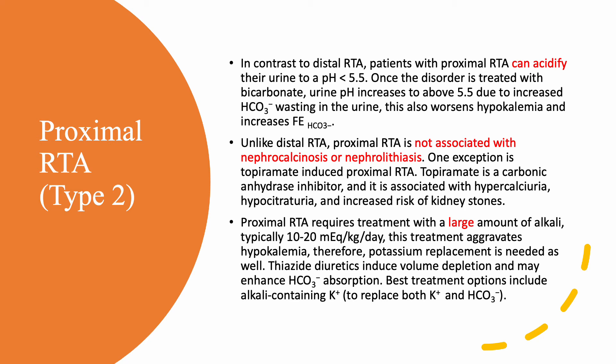One of the main differences between proximal and distal RTA is nephrocalcinosis and nephrolithiasis — never seen in proximal RTA, but can be seen in distal type 1. On a test, if they give you an RTA picture with an image showing nephrocalcinosis, this is not proximal and not type 4 — it is definitely distal type 1 RTA. One exception is topiramate, used for seizures and migraine, which can induce proximal RTA and cause hypercalciuria, hypocitraturia, and kidney stones because topiramate is a carbonic anhydrase inhibitor. Acetazolamide is another carbonic anhydrase inhibitor.